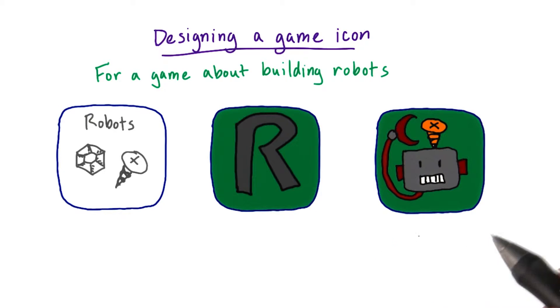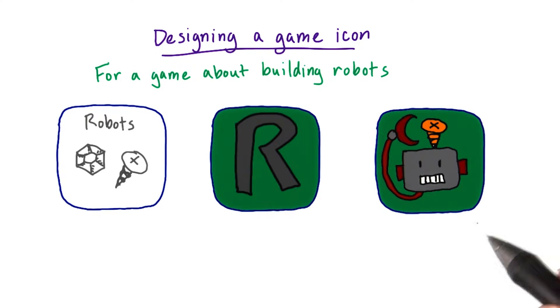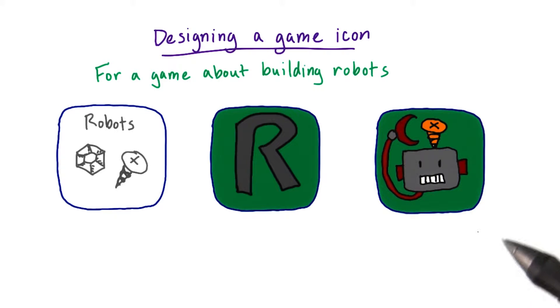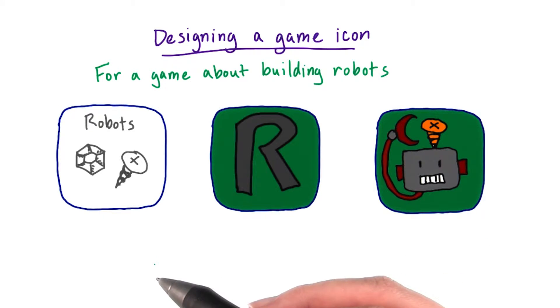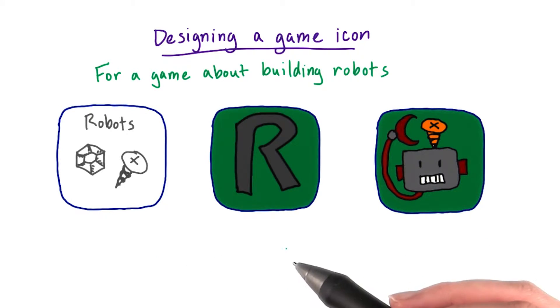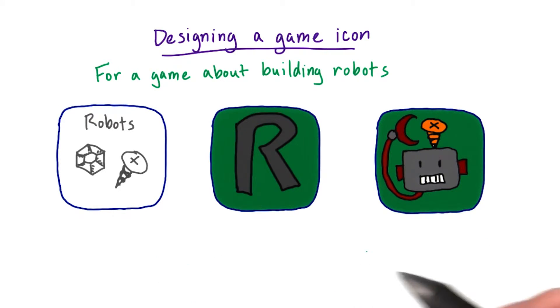Say I'm trying to build a game that lets people build their own robots, but I'm not sure what I want the icon to look like. Let's consider these three options for an icon and decide on the best design.